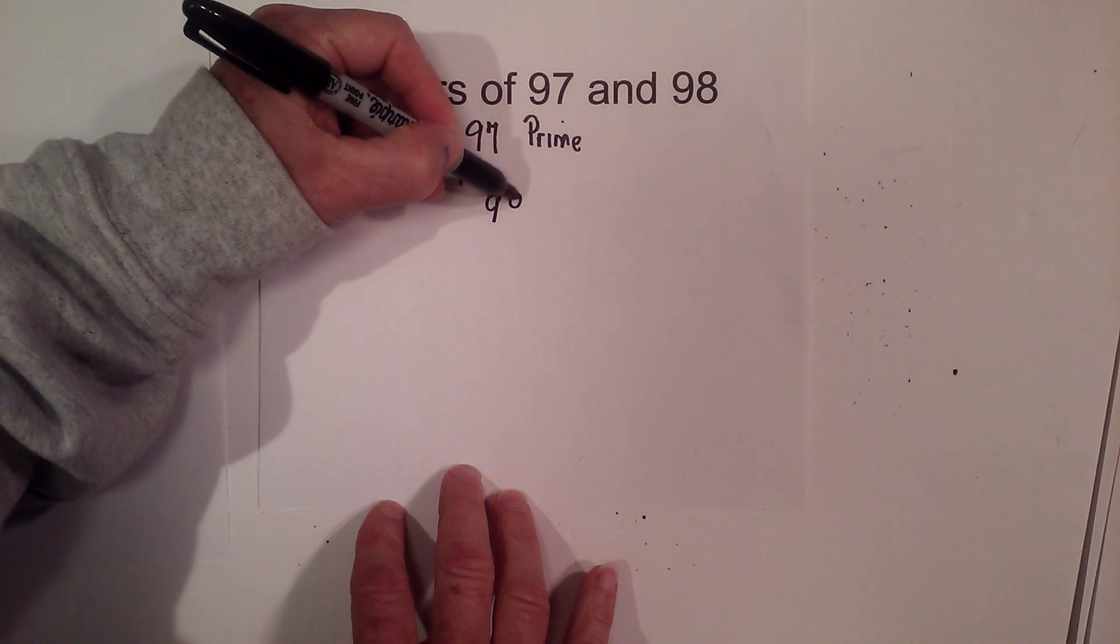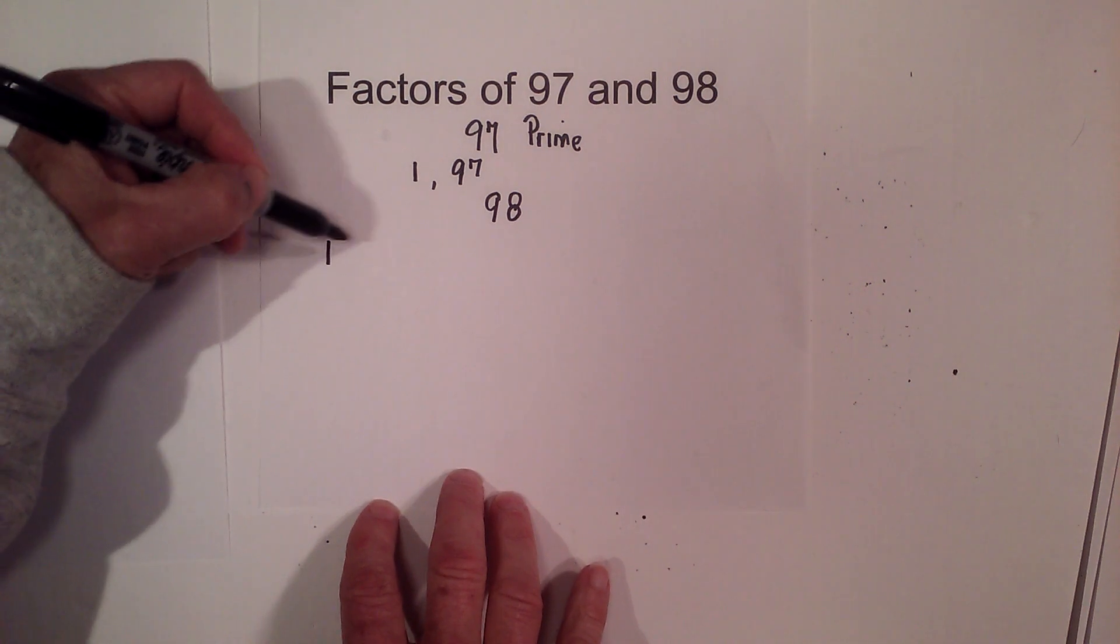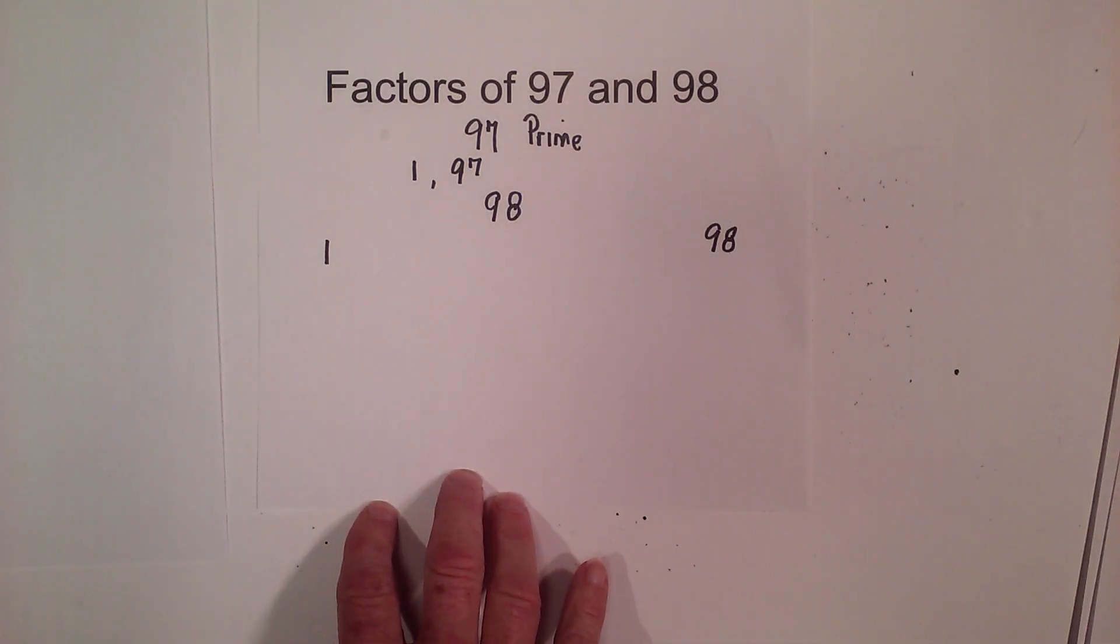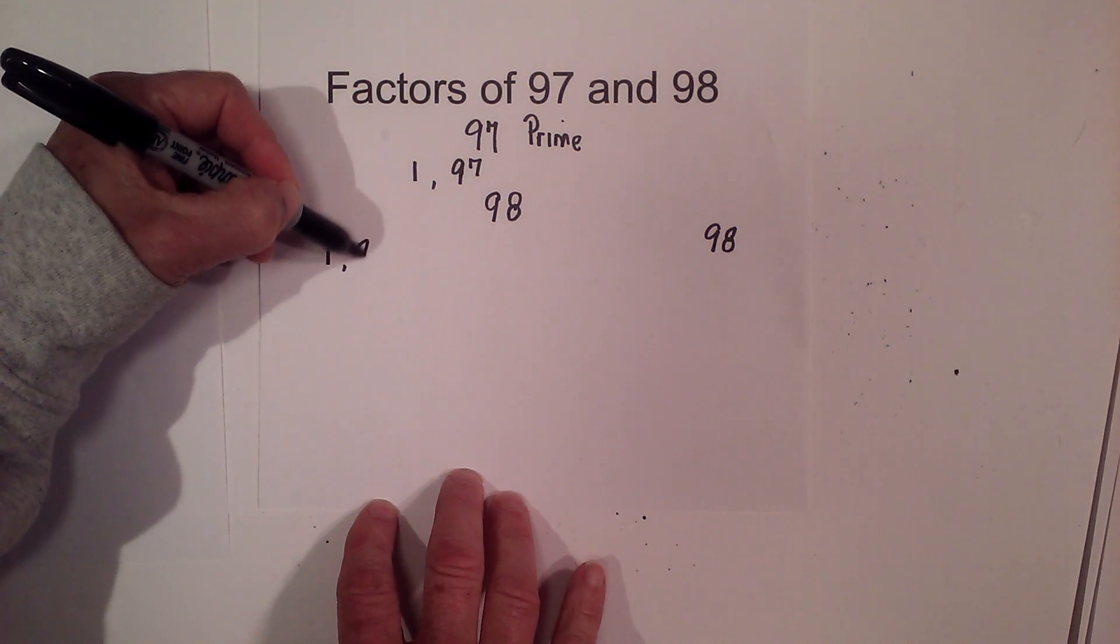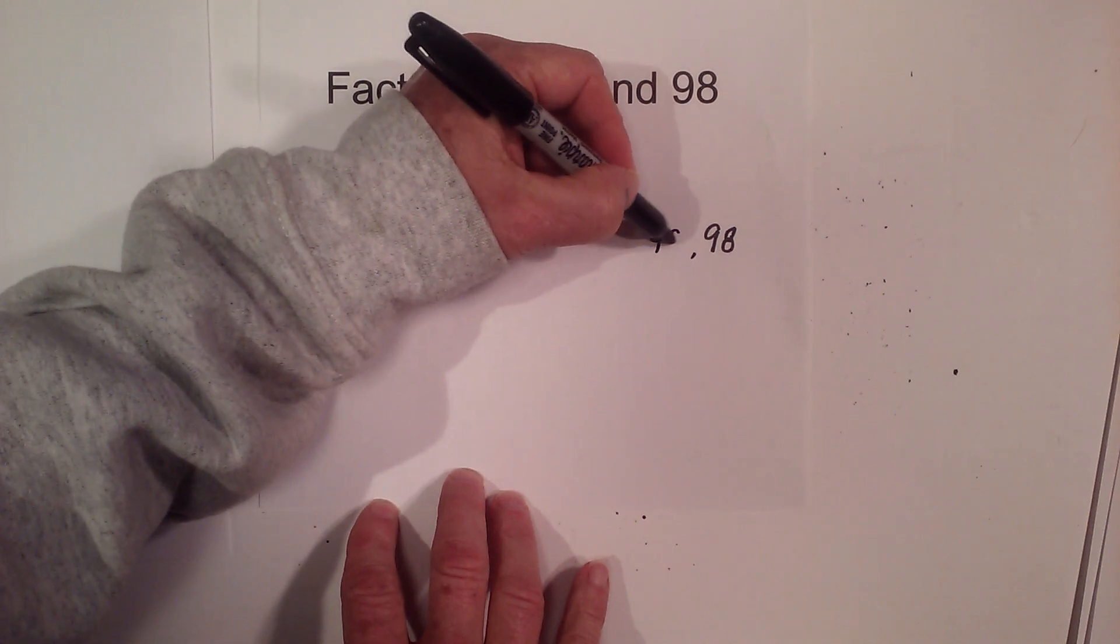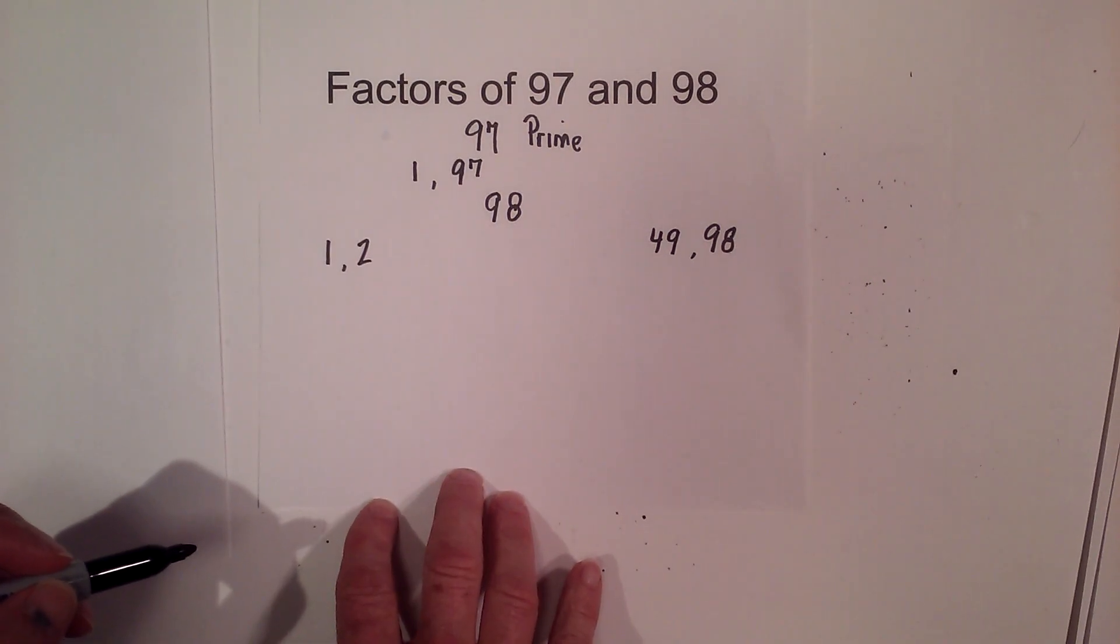Let's get started with 98. 98 is a composite number. I'll start with 1 times 98, and then 2 goes into 98 because it ends in an even number: 2 times 49. And then 3 will not go in, nor will 4.